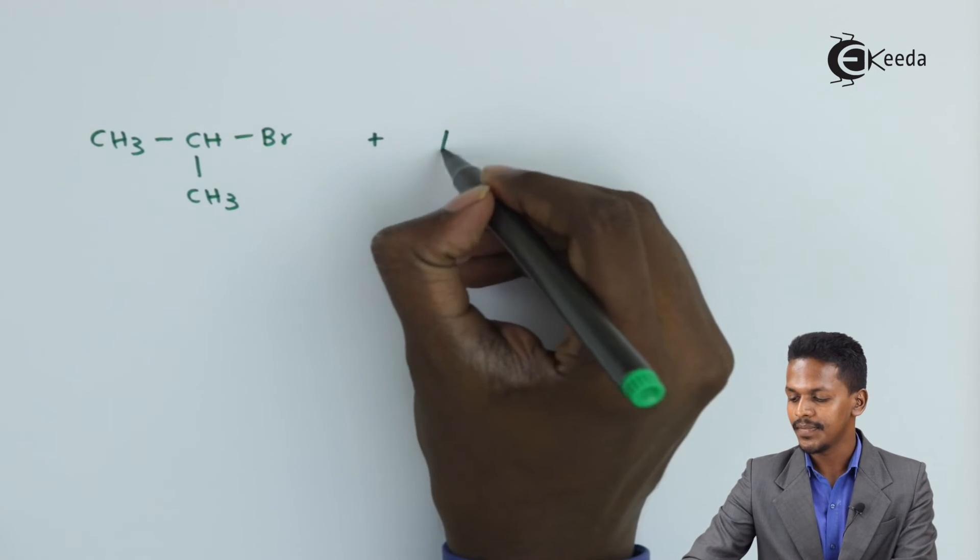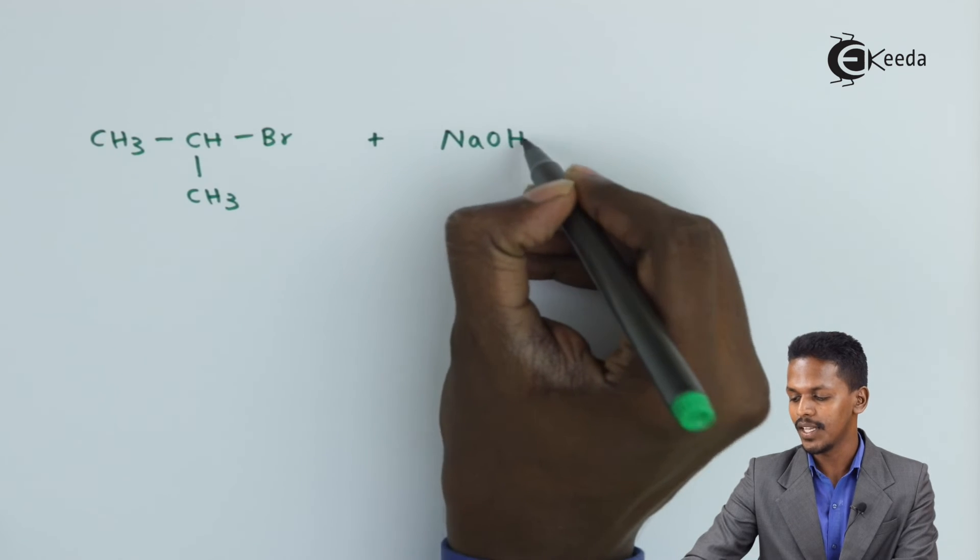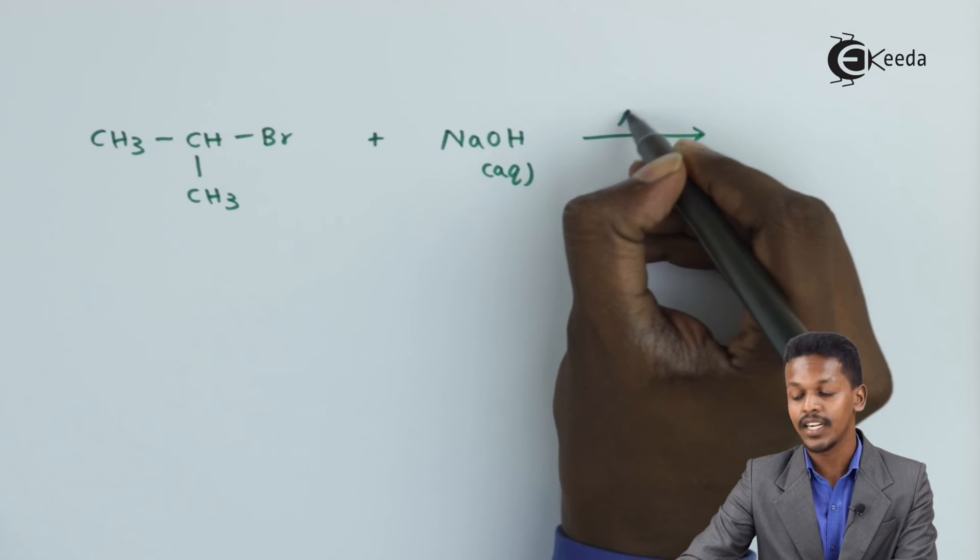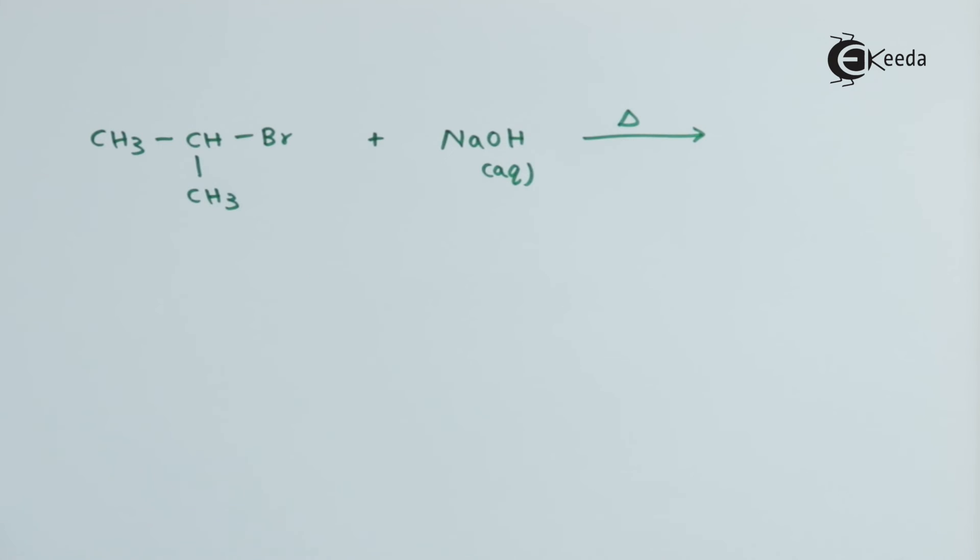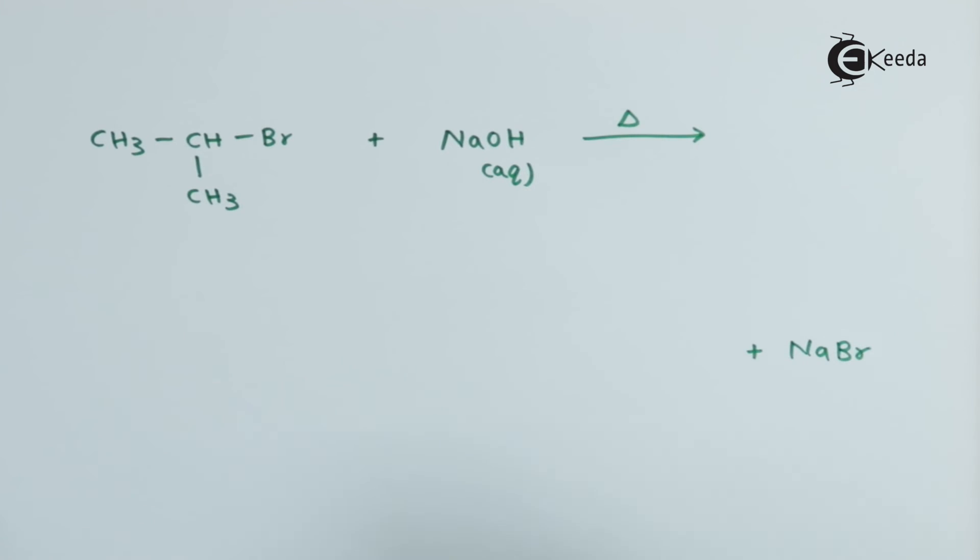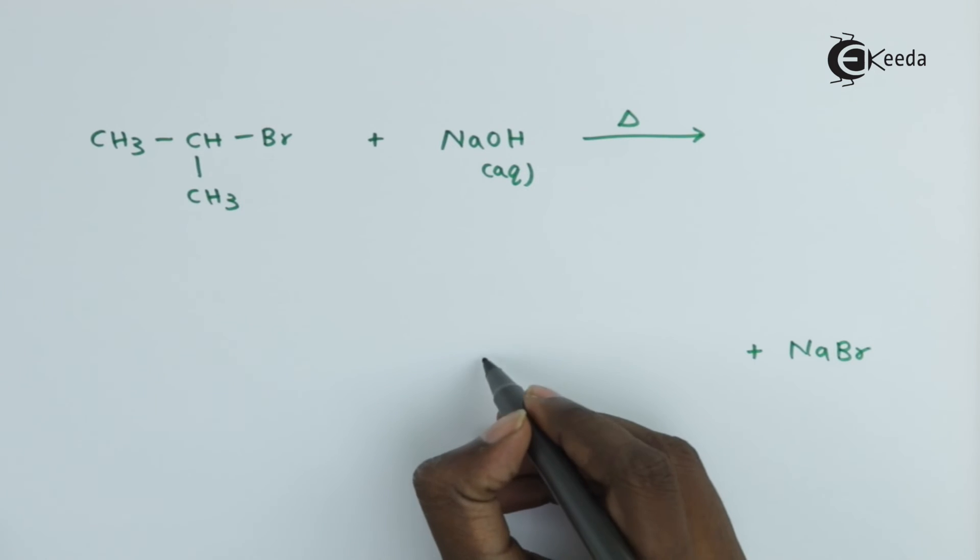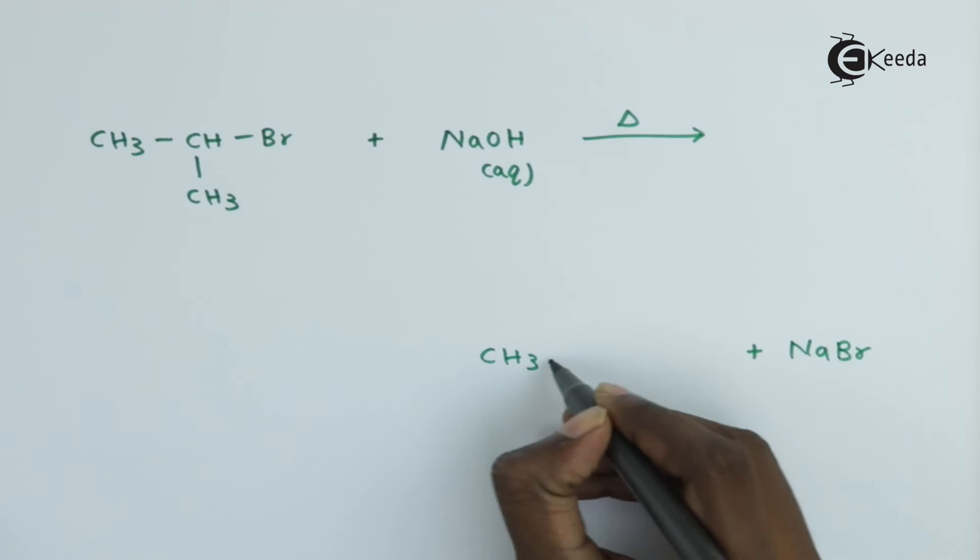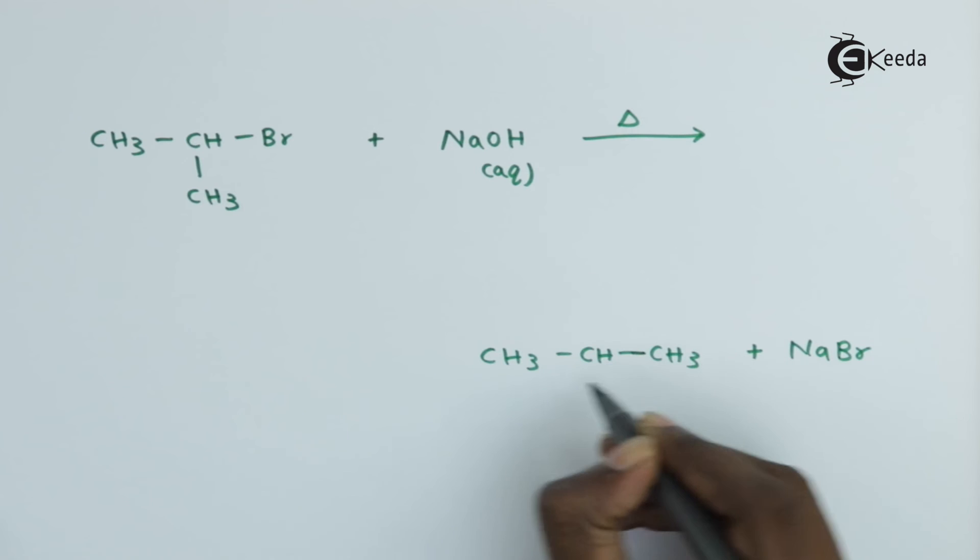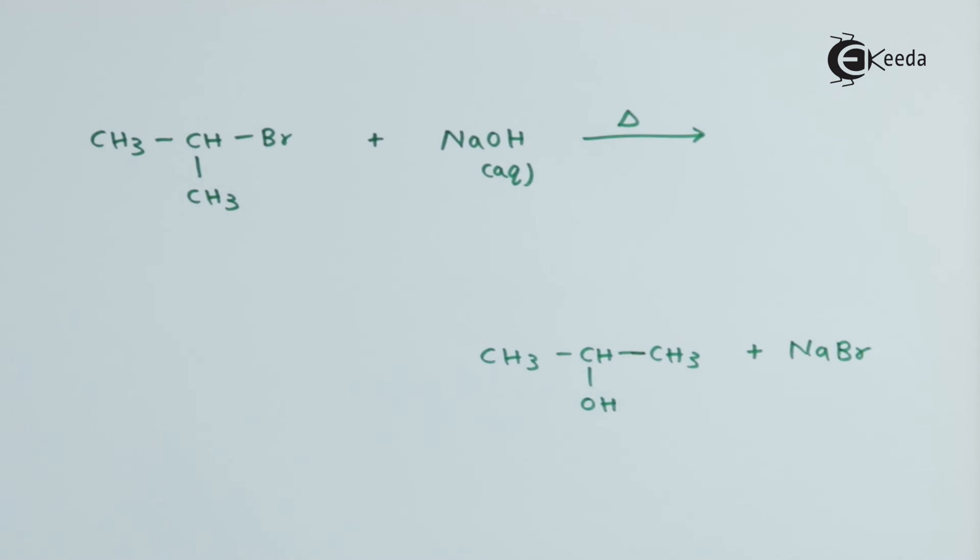If I am treating it with NaOH in aqueous condition by providing energy, obviously I get NaBr as a byproduct. But the main product that we will get in this reaction is CH3-CH(OH)-CH3.